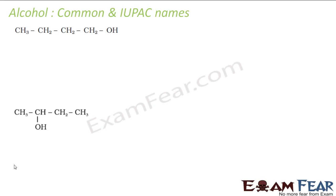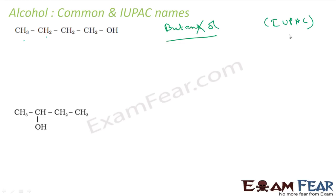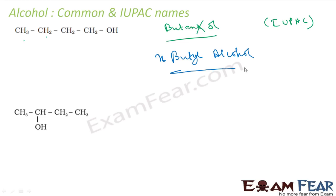Let's take some more examples. This is meth-eth-prop-but, so it is from butane. Remove '-e' and it becomes '-ol', so it becomes butanol — that is the IUPAC name. The common name: this is meth-eth-prop-but, so it is butyl alcohol. It is all straight, so it is N-butyl alcohol.